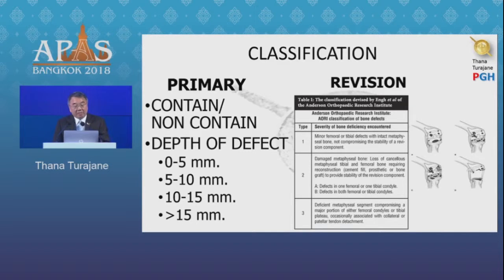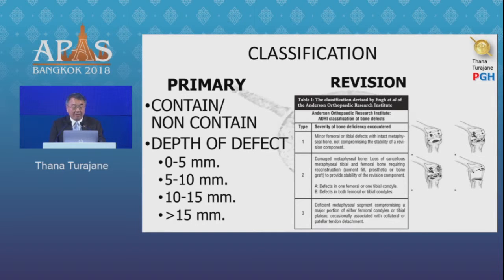In terms of classification in primary cases, consider whether the defect is contained or non-contained — which all of you know — and the depth of the defect: from 0 to 5mm, 5 to 10mm, 10 to 15mm, and more than 15mm.